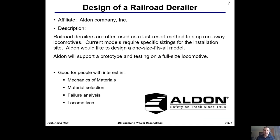This next one is awesome. Alden Railroad Company — whose owner is actually an MSOE alumni — hasn't proposed anything for senior design in the past, but this year they are. Their first project is creating a railroad derailer that's a bit of a one-size-fits-all derailer. They're willing to provide money for prototypes and bring you to their full-scale locomotive testing facility — if you make a prototype, they are willing to actually derail a train with it. If you're into mechanics, materials, material selection, failures, and trains, and you want to derail a 200,000-pound train, this sounds like the coolest project ever.